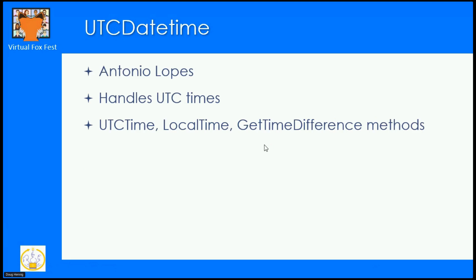Next is UTC DateTime, also created by Antonio Lopes. It handles UTC times and has a variety of properties and methods. The most important ones are UTC time — which gives you the current time in UTC — Local time, which gives you the equivalent of the datetime() function for local time, and get_time_difference, which tells you the difference between two datetimes that could be in different time zones.